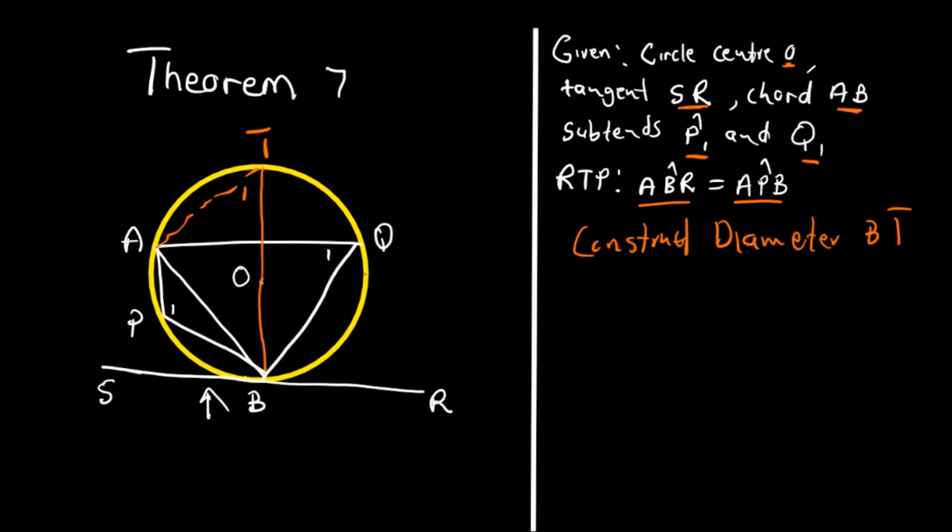What we know is that this angle here, which is angle SBA, when added with this one here, plus angle ABT, if we add them together, we should get 90 degrees. The reason for that is tangent perpendicular to radius.